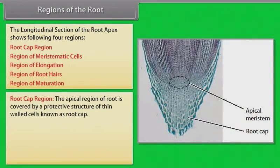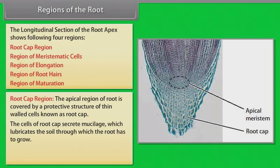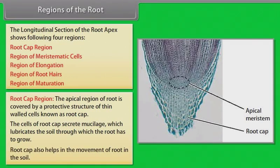Root cap region: The apical region of the root is covered by a protective structure of thin-walled cells known as the root cap. The cells of the root cap secrete mucilage, which lubricates the soil through which the root has to grow. The root cap also helps in the movement of the root in the soil.